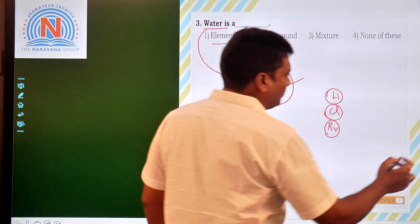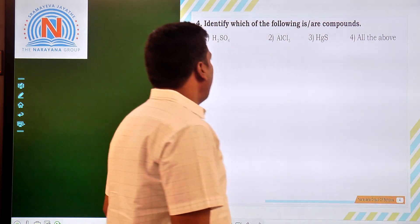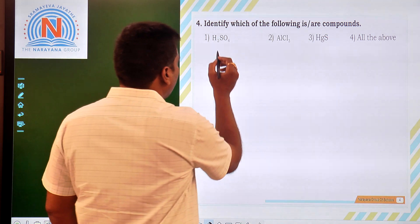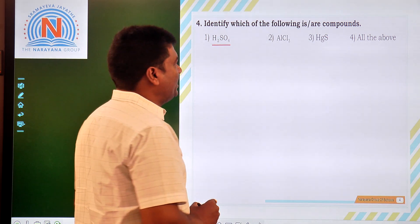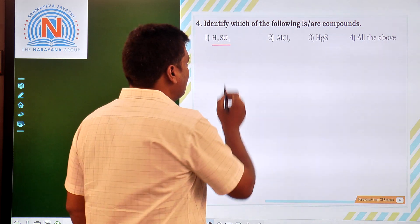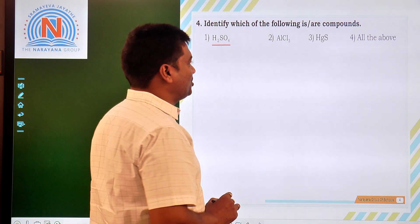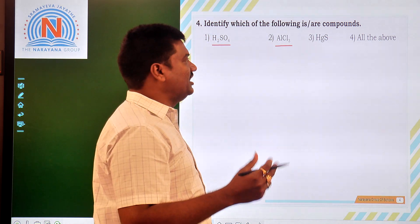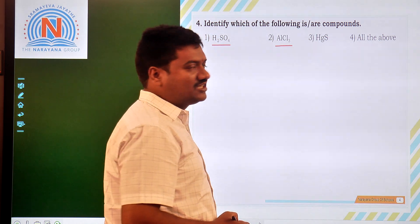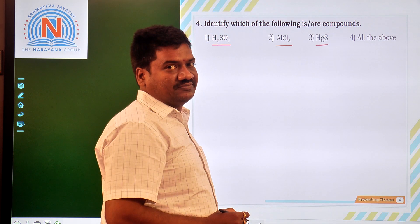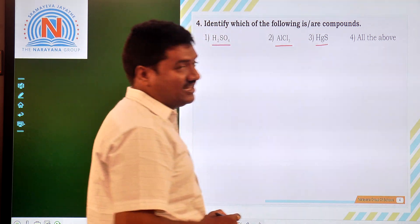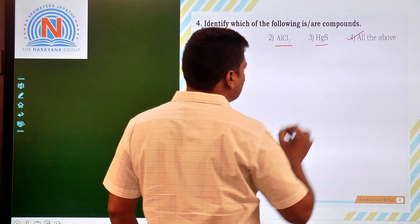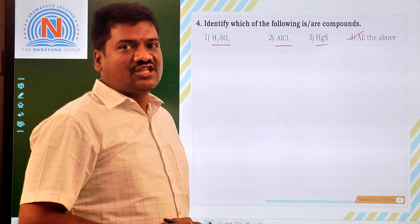The fourth question: identify which of the following are compounds. Sulfuric acid, H2SO4, is made up of different elements, so it is a compound. Aluminium chloride, AlCl3, is also made up of different elements, so it is a compound. Mercuric sulfide, HgS, is also made up of different elements. Therefore, all the options are examples of compounds.